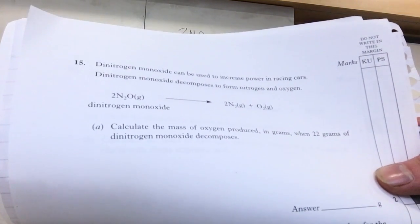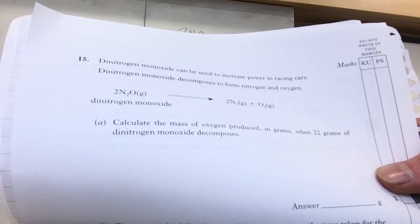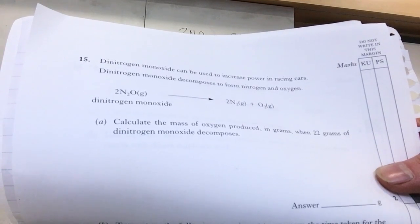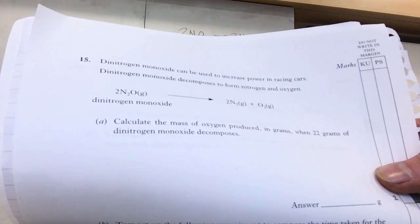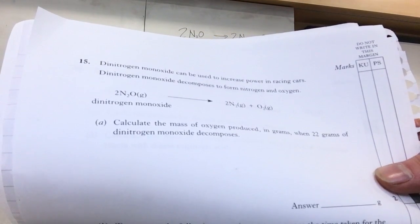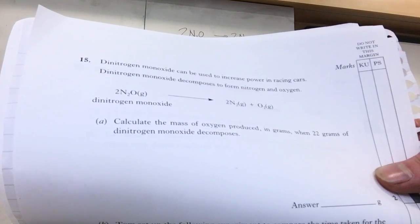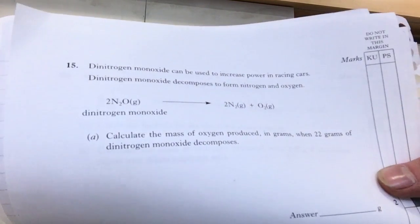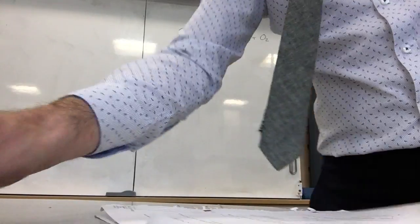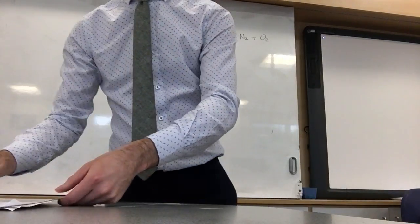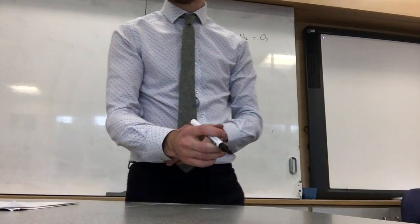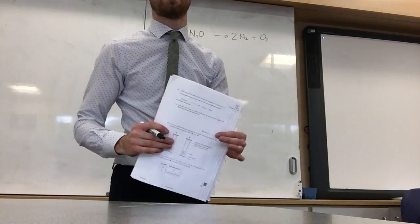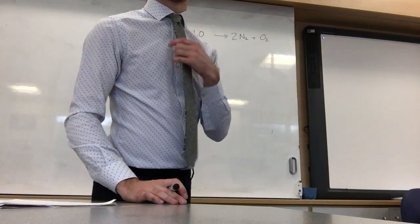Dinitrogen monoxide can be used to increase power in racing cars. Dinitrogen monoxide decomposes to form nitrogen and oxygen. Calculate the mass of oxygen produced in grams when 22 grams of dinitrogen monoxide decomposes. So this is a question taken straight out of the pass paper, a credit pass paper from 2009. These are the kind of questions that you could be asked in a National 5 exam.